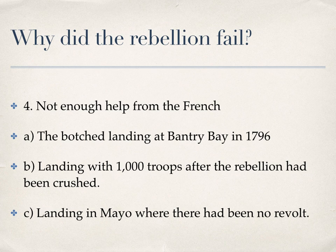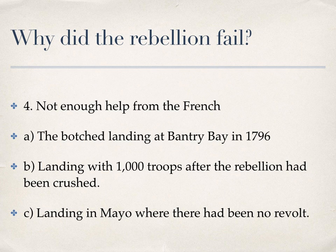The fourth reason the rebellion failed was that there simply wasn't enough help from the French. They botched the landing at Bantry Bay in 1796, and when they landed in Mayo in 1798 the rebellion had already been crushed. There had been no revolt in Mayo, so they had no real base of support and only landed with a thousand troops, hoping the Irish would rise up again. The English did fear the French — who would become the most formidable force in Europe for the next 20 years — but they didn't bring that force to Ireland, and had they done so, perhaps the outcome in 1798 could have been different.